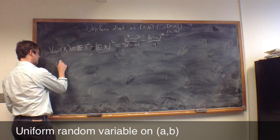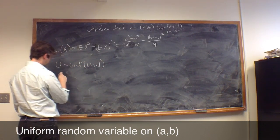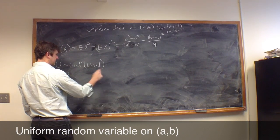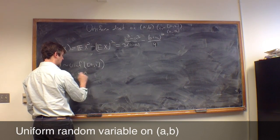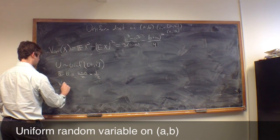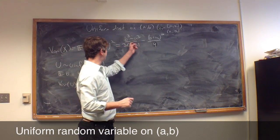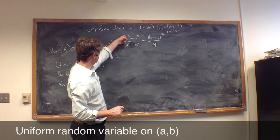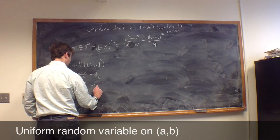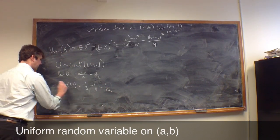But as an exercise, let's let U be uniform on (0,1). That means the expected value of U is (b+a)/2, which in this case is (1+0)/2 which is 1/2. And the variance of U, we plug in 0 for all the a's and 1 for all the b's, so this is 1/3 minus 1/4, which is 1/12. So the variance of U is 1/12.